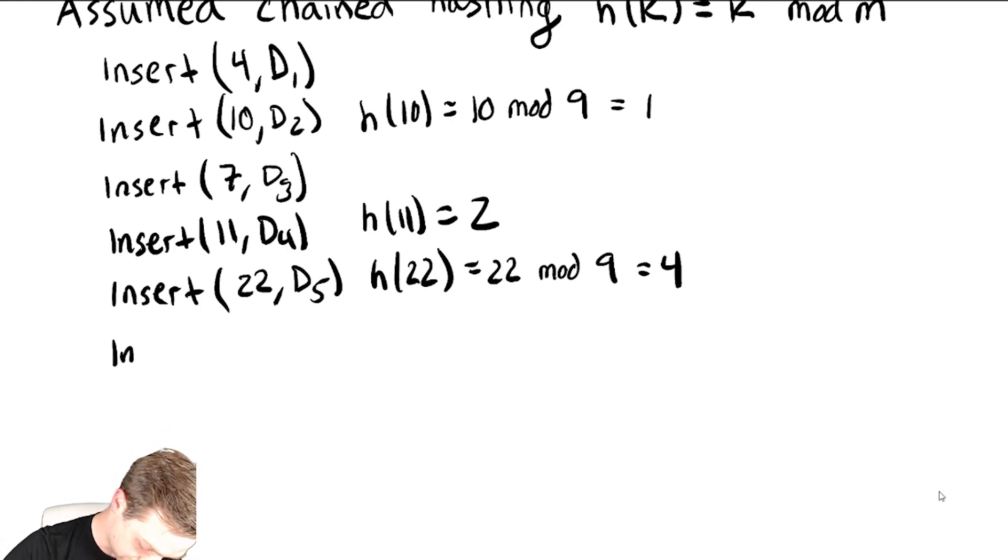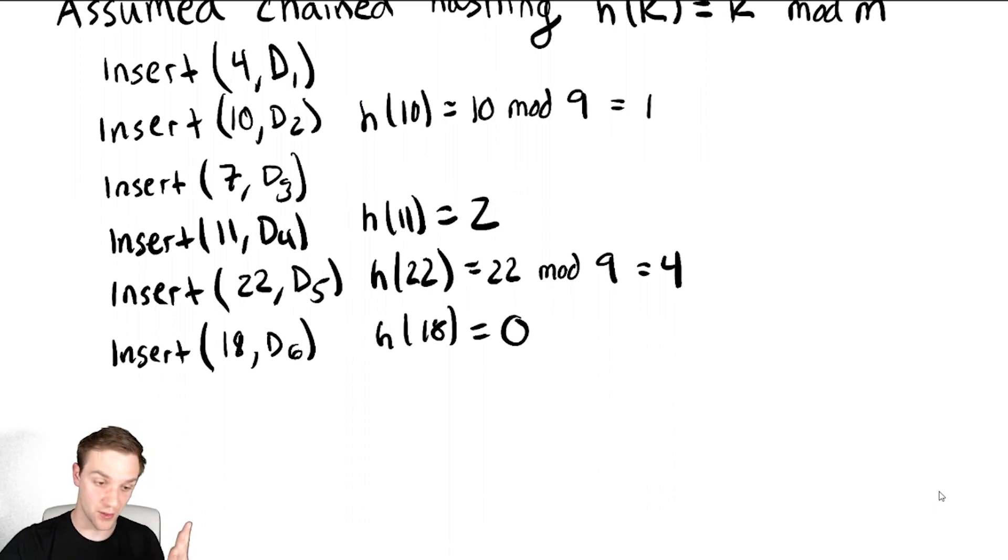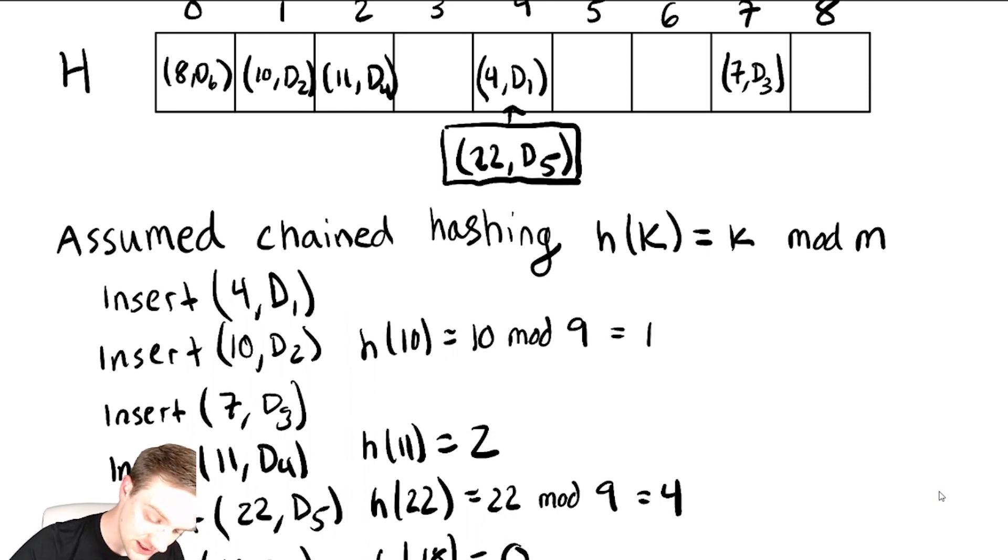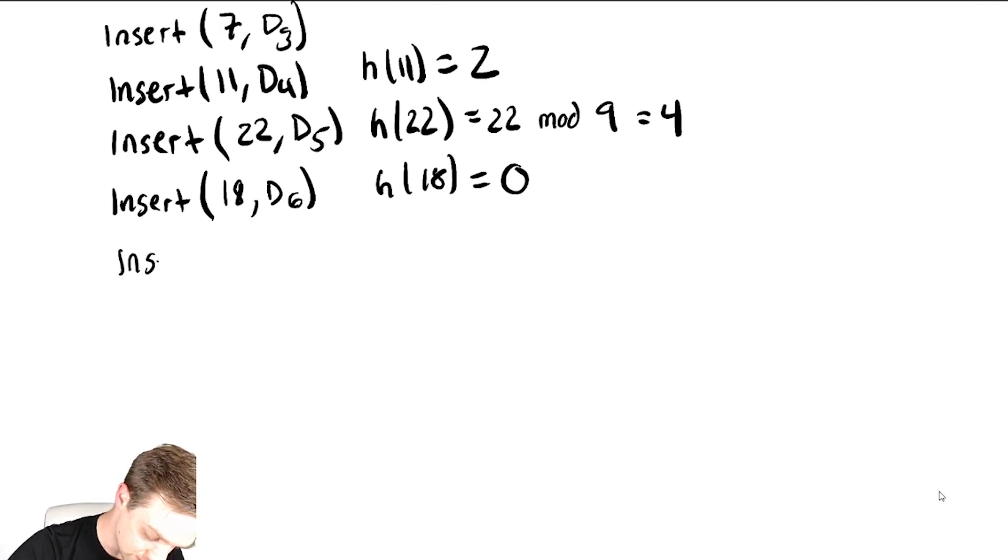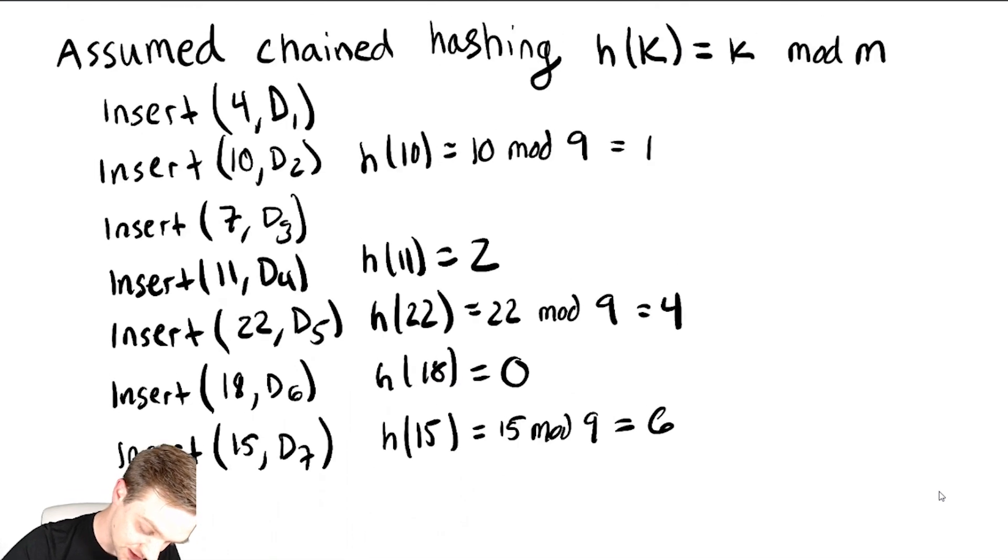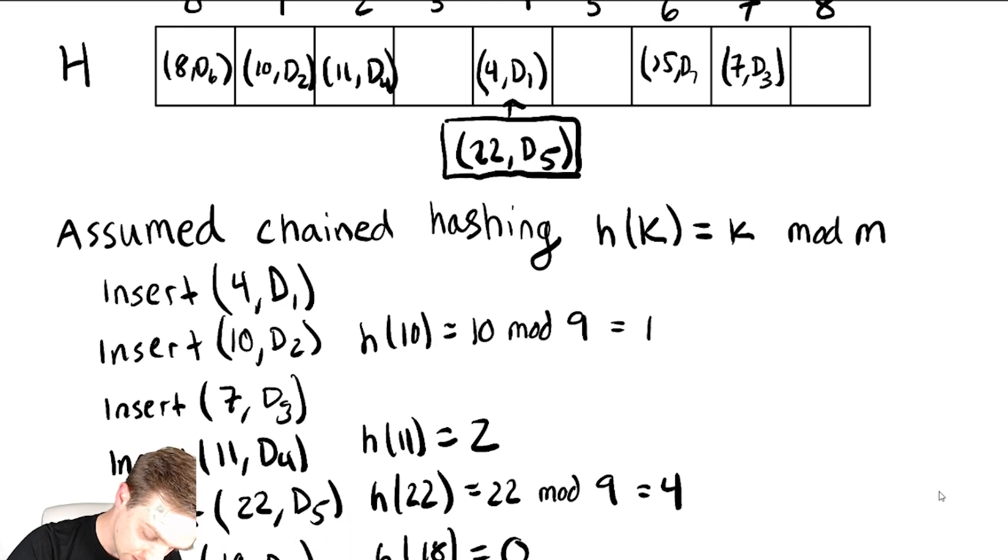Now let's suppose we did an insert of 18, d6. This gives us h of 18 is 0, 18 is a perfect multiple of 9, so we get 18, d6. And now we're really starting to run out of space there, so we're more likely to get collisions now. Now we get insert of 15, d7, that's h of 15 is equal to 15 mod 9, which the remainder there is 6. So we insert 15, d7 at that location.